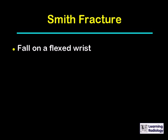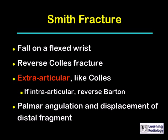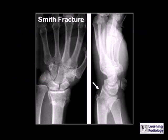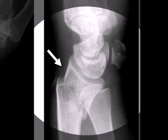A Smith fracture occurs because of a fall on a flexed wrist. It is, in effect, a reverse of a Colles' fracture. It is also extra-articular, like a Colles' fracture. If it is intra-articular, it's sometimes referred to as a reverse Barton fracture. There is palmar angulation and displacement of the distal fragment rather than posterior or dorsal angulation. On the lateral view, you can see the palmar angulation of the distal fracture fragment.